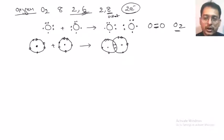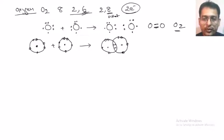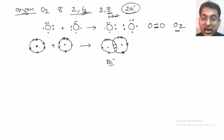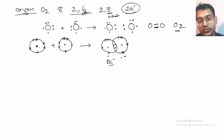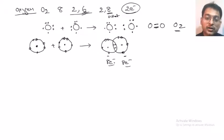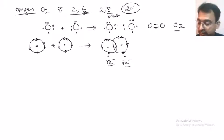Now, can you tell how many electrons are there in each atom in the valence shell? There will be 8 electrons, because these electrons are shared. You are not counting only these 2 electrons — you are counting all 4 shared electrons. So each atom counts 4, 5, 6, 7, 8 — 8 electrons here and 8 electrons here. Both atoms have got the octet number of electrons, therefore now they are stable.